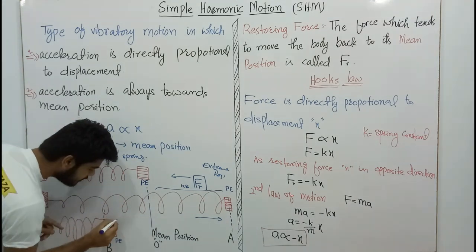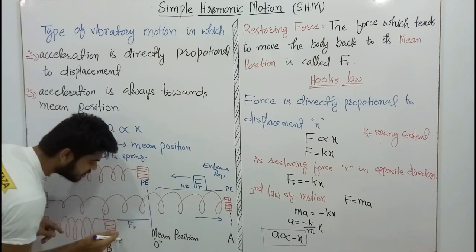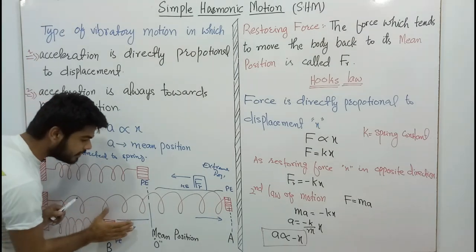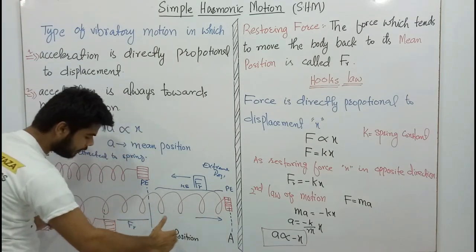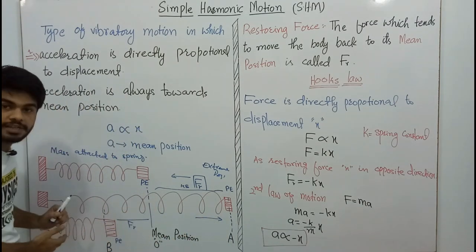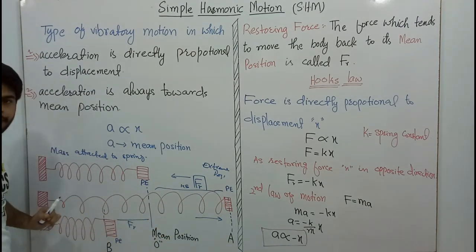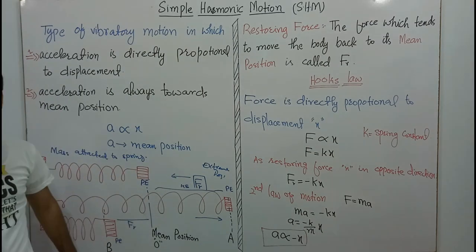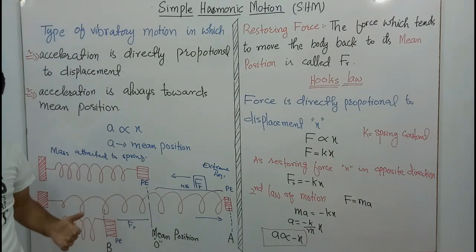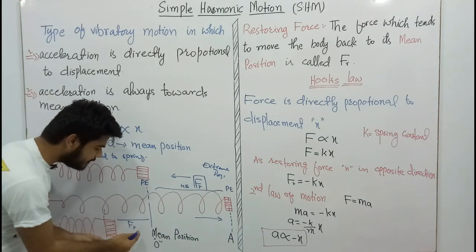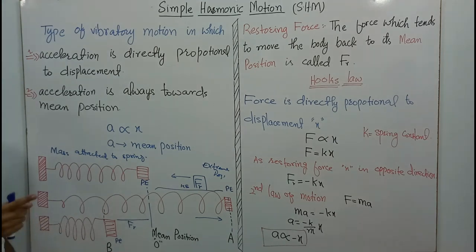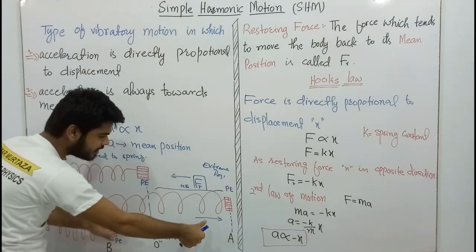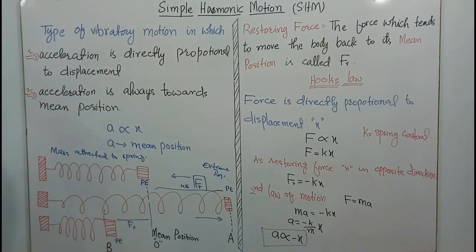So here is the restoring force — this direction is going toward the mean position. The restoring force is again directed toward the mean position. Because of this, the body oscillates — it undergoes to-and-fro motion, an oscillation. The restoring force is always opposite to the direction of displacement, so we give it a negative sign.